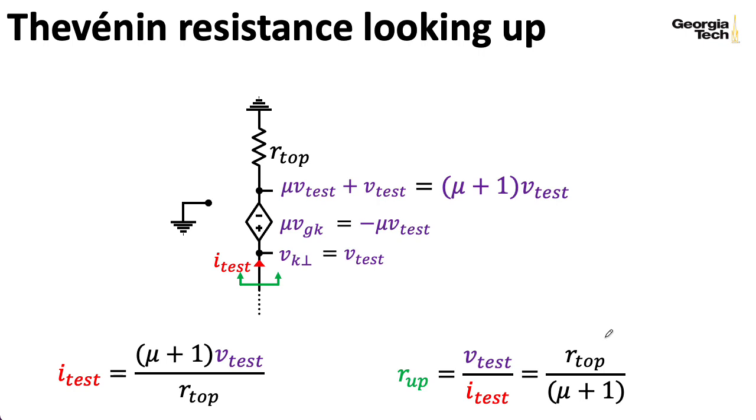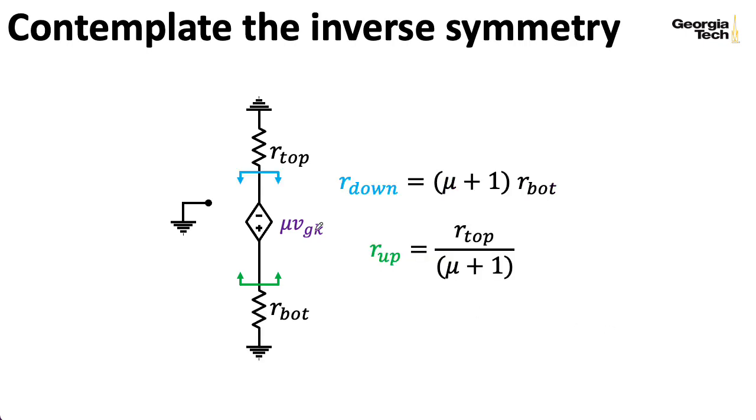Notice the interesting symmetry here. If we're looking down into the negative terminal, we see this resistance on the other side multiplied by Mu plus one. Whereas if we're looking up into the positive terminal, we're seeing this resistance divided by Mu plus one. So that's really interesting. And this here explains why the common grid amplifier configuration has such mediocre input impedance. Because whatever resistance you see up here, well that winds up getting shrunk by dividing by Mu plus one. And for an input impedance, if we're transferring information with voltages, we want that input impedance to be high. But this also explains why the cathode follower, the common drain configuration, is such a good voltage buffer. Because for a voltage output, you want the output impedance to be low.